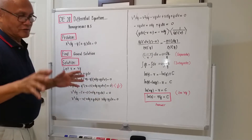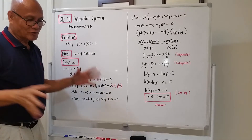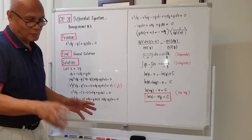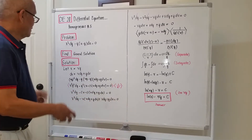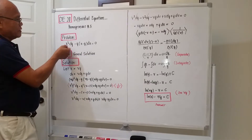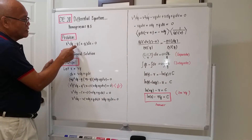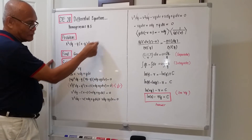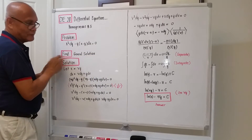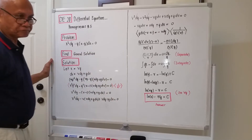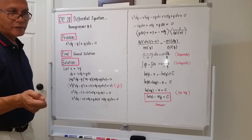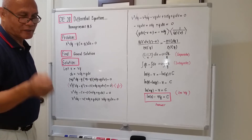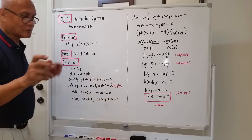My next topic will be differential equations solvable by using integrating factors. I want to maximize the number of example problems for each topic, especially for those taking up engineering. The given problem is: x squared dy minus y times the quantity (x minus y) dx equals zero. We are not given any initial condition, so what is being asked is the general solution.